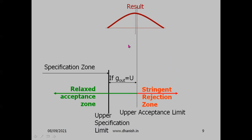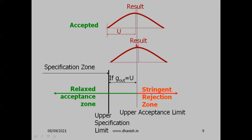If the measurement result average is to the left of the upper acceptance limit — in the relaxed acceptance zone — the product is accepted, even if there is a high probability it is outside the specification. This applies to non-critical or costly products. If the average is beyond the upper acceptance limit in the stringent rejection zone, the product is rejected.